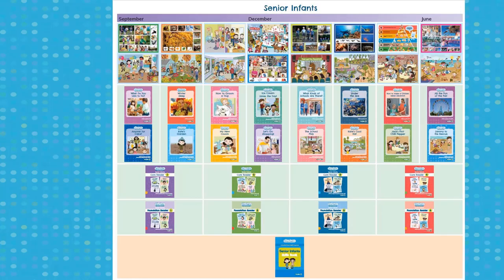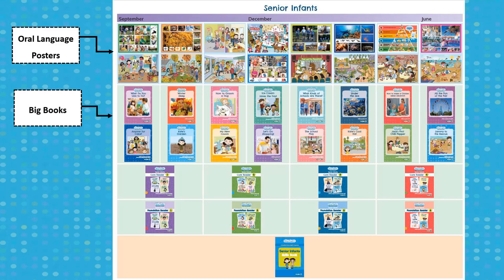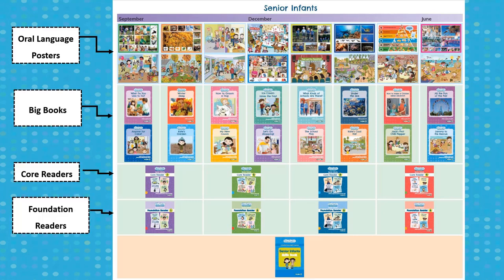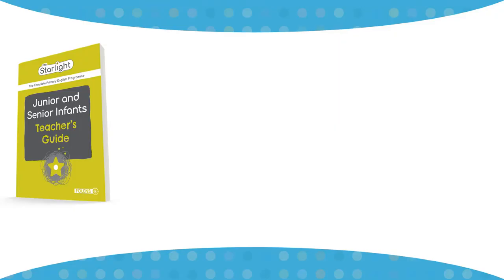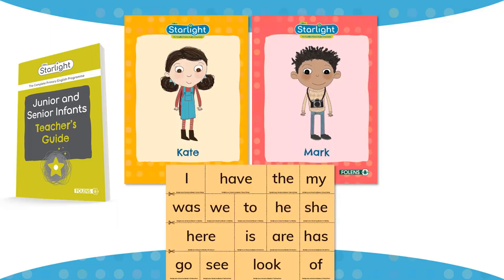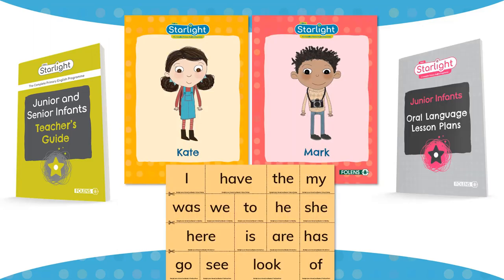The Starlight Infant programme comprises print and digital oral language posters and big books, core and foundation readers and skills books. There is also a comprehensive teacher's guide, character and sight word posters, oral language lesson plans and lots of online printables.